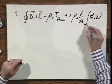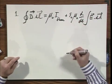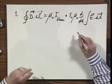And this part, including the epsilon zero, is often called the displacement current.